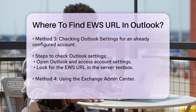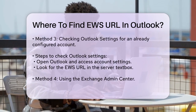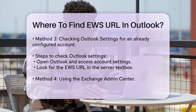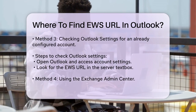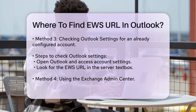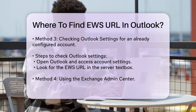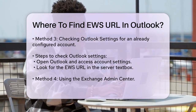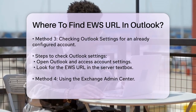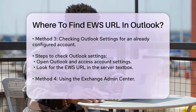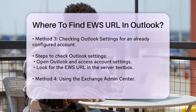Checking Outlook Settings: in some cases, you can find the EWS URL directly from an already configured Outlook account. Open Outlook and go to Account Settings. If the account is set up using EWS, the Server text box will contain the EWS URL.